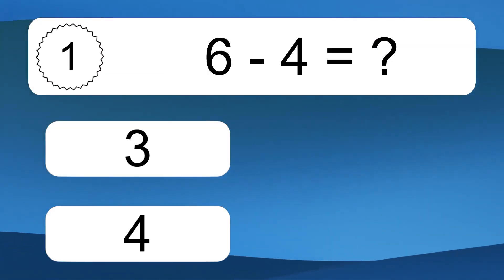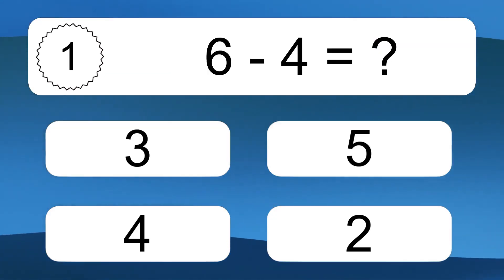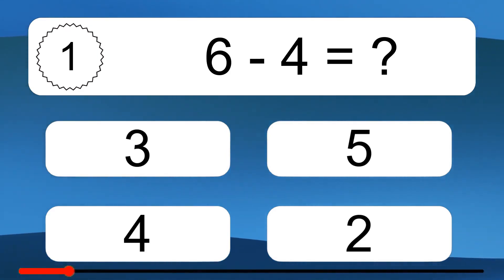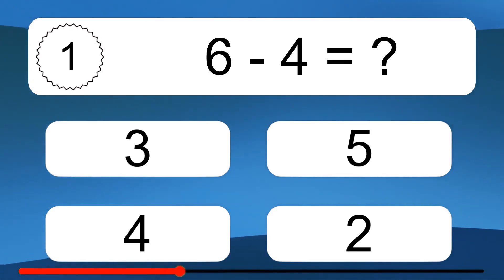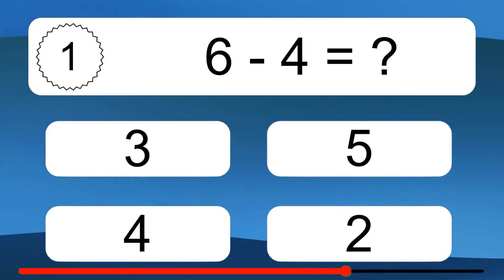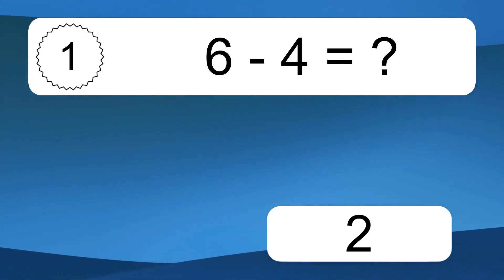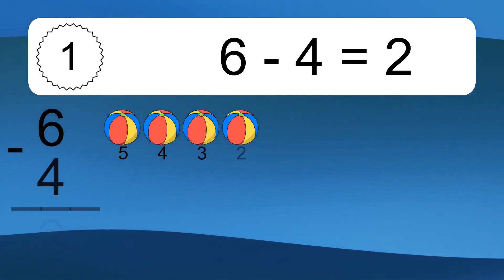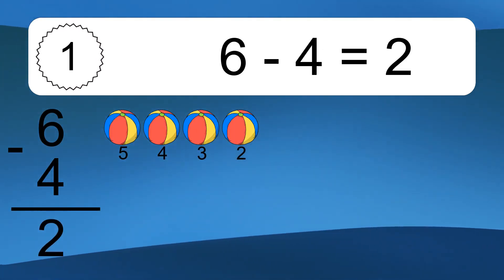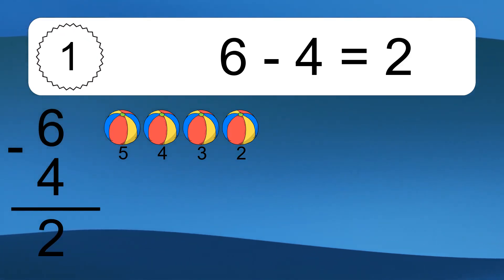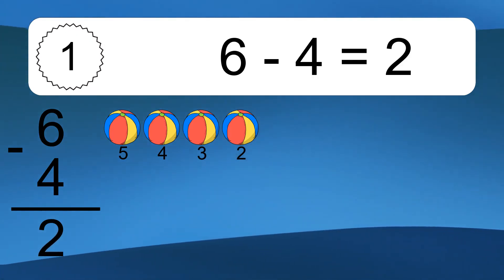6 minus 4 equals what? 6 minus 4 equals 2. Let's count it: 5, 4, 3, 2.